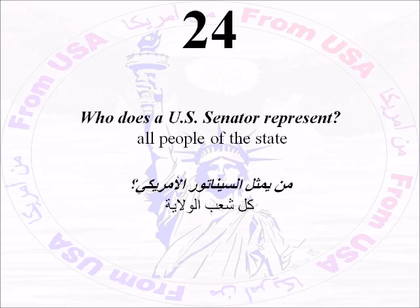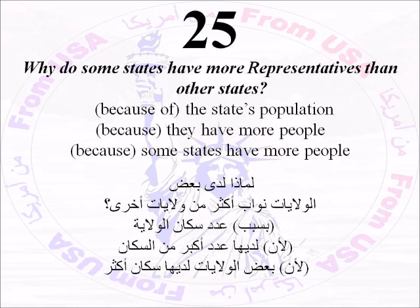Number Twenty-Four: Who does a U.S. senator represent? All the people of the state. Number Twenty-Five: Why do some states have more representatives than other states? Because of the state's population — some states have more people.